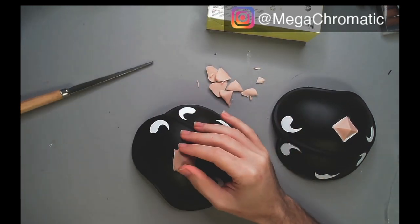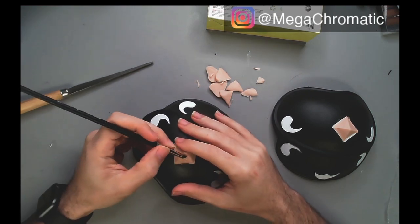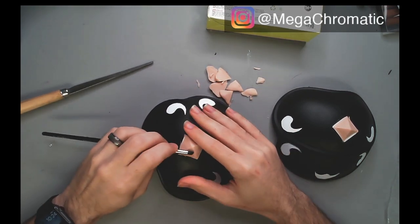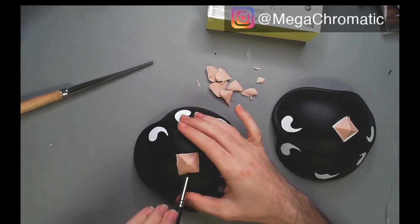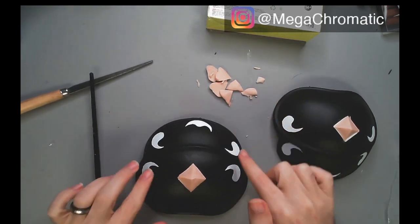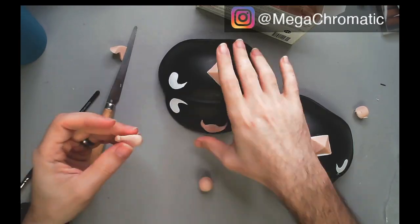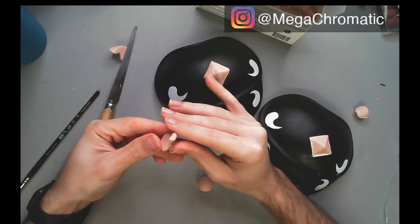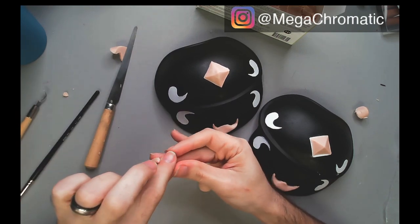The Sculpey, you can actually bake or cook or harden in different ways. The box is going to tell you to bake them in your kitchen oven, but you're able to use a heat gun or you're able to boil them in order to get the clay to harden. So this is what I'm going to be doing on this because I want them to keep the shape of the shoulder pads.